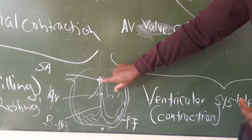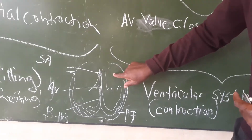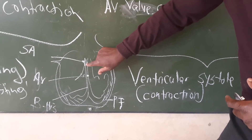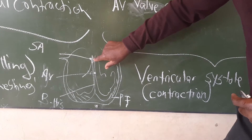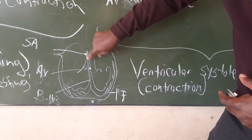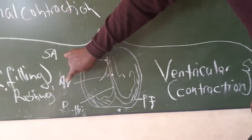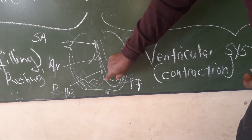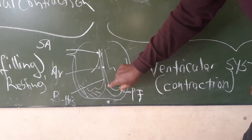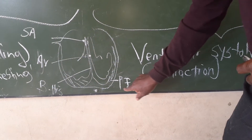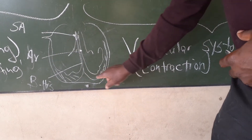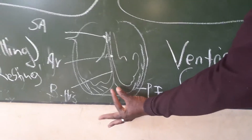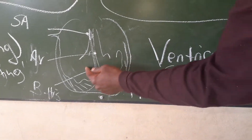Once the electrical impulse is ignited at the sinoatrial node, it makes the atria contract. When they contract, they send the impulse through the bundle of His towards the atrioventricular node. This node sends the impulse further towards the tip of the heart through the bundle of His, and then it is spread by Purkinje fibers. When the electric current reaches there, it causes the heart to squeeze, and the blood is able to go up.